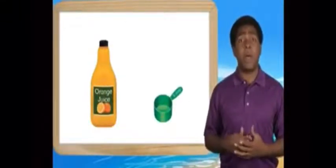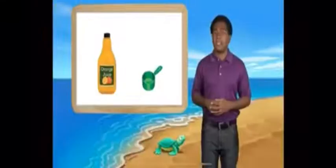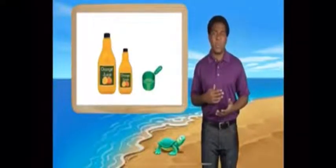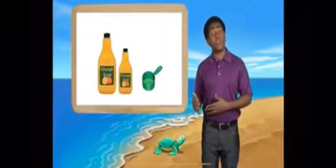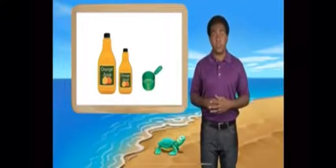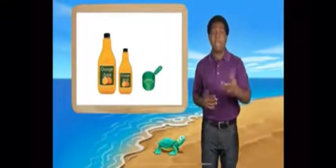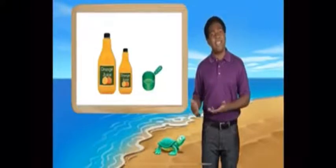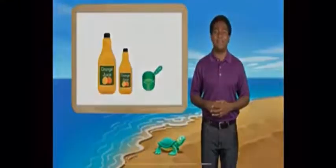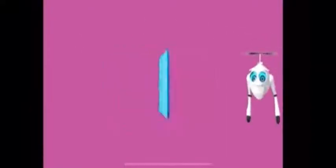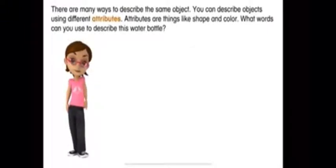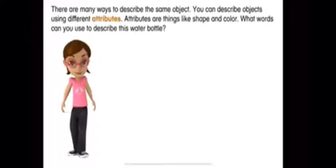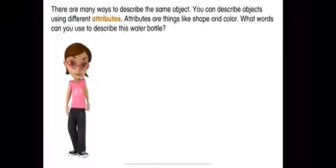We can describe how much juice the bottle holds. A tool such as a measuring cup helps us tell how much something holds. The smaller juice bottle holds less juice than the larger bottle, and the larger bottle holds more juice than the smaller bottle. Now it's your turn — find an object in the room and see how many attributes you can use to describe it.